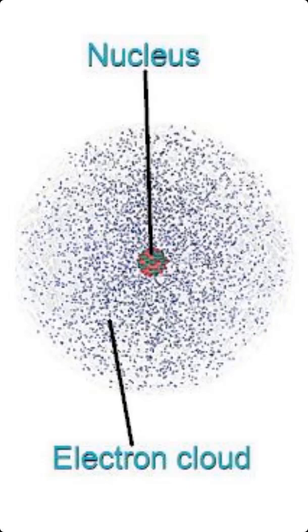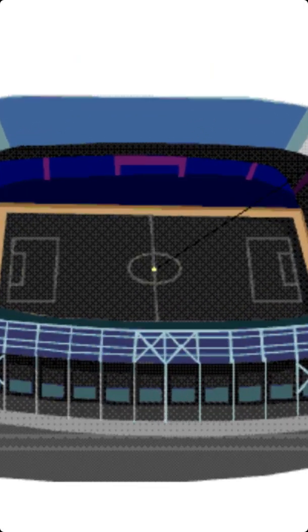For example, if the electron cloud were the size of a football stadium, the nucleus would be a marble at the center of the stadium.